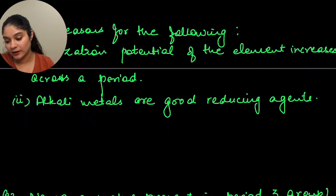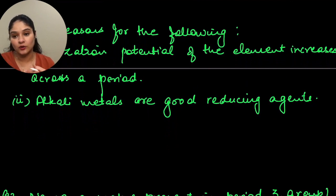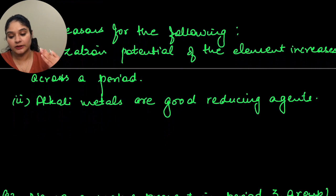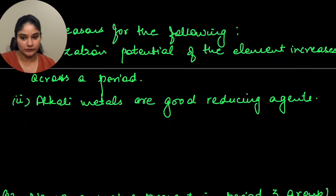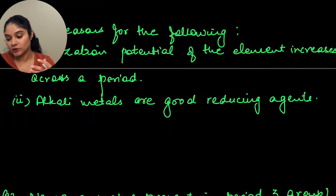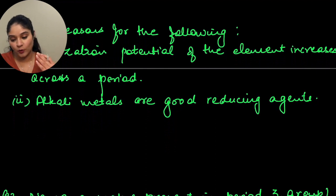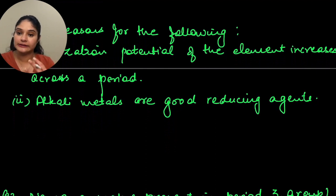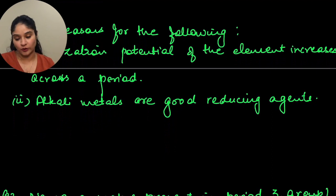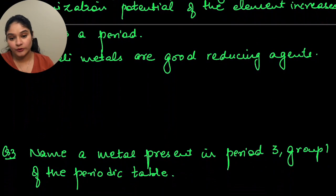Next: alkali metals are good reducing agents. Why? Because they easily lose or donate electrons. They have one electron in the outermost shell, and hence it is easy for them to lose or donate electrons.